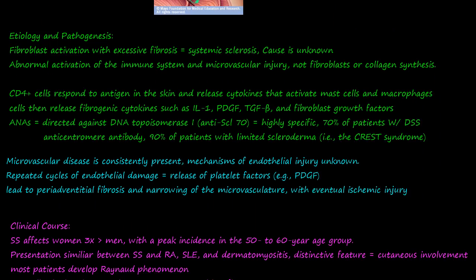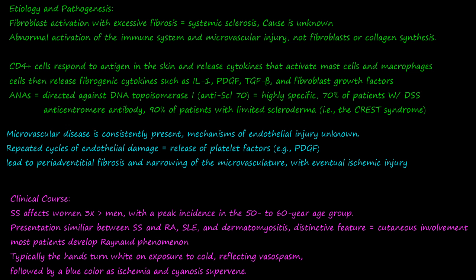Now let's talk about the etiology and pathogenesis. The cause is unknown, but what is believed to happen is fibroblast activation with excessive fibrosis. Fibroblasts are cells inside your tissues, skin, and loose connective tissue that lay down collagen, which causes rigidity and toughness to your skin. Somehow these fibroblasts get activated, which then causes excessive fibrosis — the hallmark feature of systemic sclerosis.